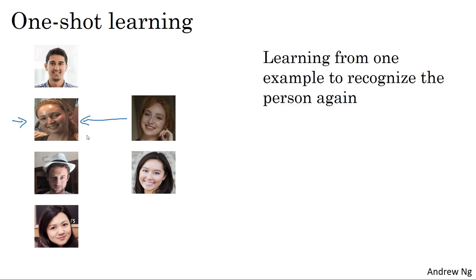So in the one-shot learning problem, you have to learn from just one example to recognize the person again. You need this for most face recognition systems because you might have only one picture of each of your employees in your database. One approach you could try is to input the image of the person, feed it to a ConvNet, and have it output a label using a softmax unit with four outputs or maybe five outputs corresponding to each of these four persons or none of the above.